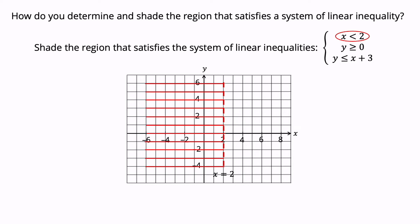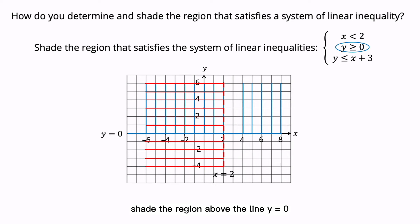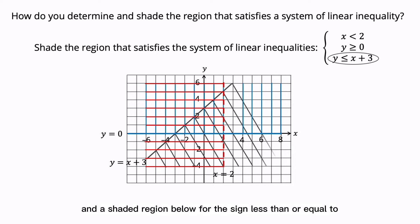The inequality Y greater than or equals to 0 is shown by a solid line at Y equals to 0. Y equals to 0 is the line of the X-axis. For the sign greater than or equals to, shade the region above the line Y equals to 0. For the linear inequality Y less than or equals to X plus 3, it is shown by a solid line with the equation Y equals to X plus 3, and a shaded region below for the sign less than or equals to.